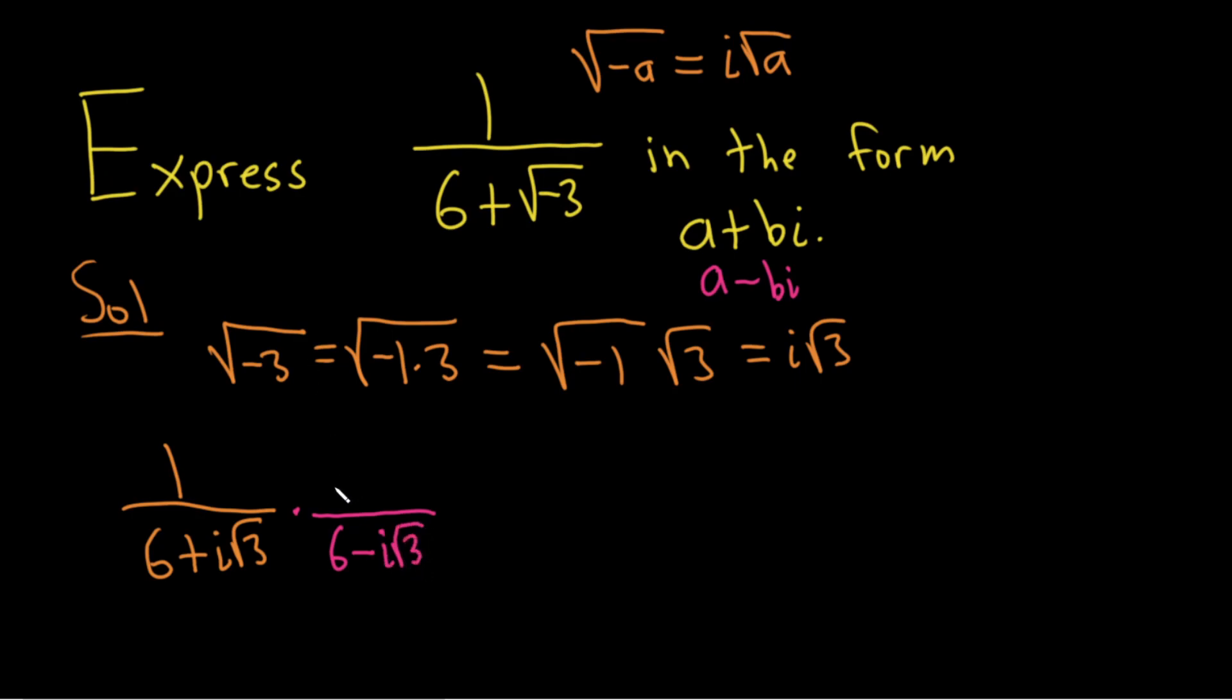But if you do that to the bottom, you have to do it to the top. So we're basically multiplying by 1. That way the math is still legit.